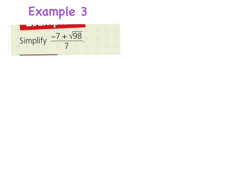Okay, so here we have simplify (-7 + √98) over 7. So obviously my 7 can go into my minus 7, that's fine. But I can't simplify this part here. So I'm going to see if I can write √98 in a different way. So √98, well remember our square numbers.